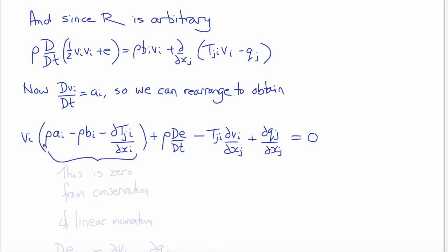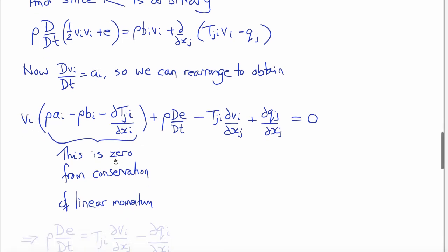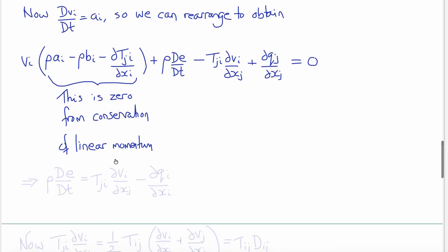We recognize that the term inside the brackets is zero from conservation of linear momentum, which states that rho A_i equals rho B_i plus ∂T_{ji}/∂x_i. So that term is zero, and therefore our conservation of energy equation simplifies to: rho dE/dt equals T_{ji} ∂V_i/∂x_j minus ∂Q_i/∂x_i.